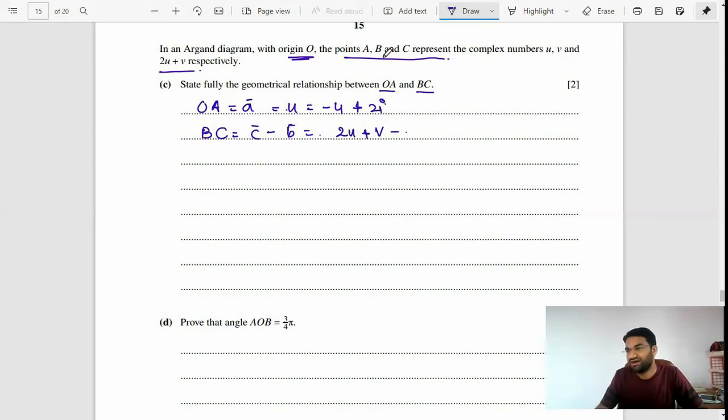BC equals 2u, which is 2 times OA. Any vector or line which is a multiple of another line means that they are parallel. So OA and BC are parallel.